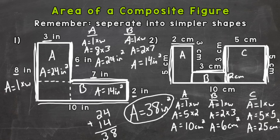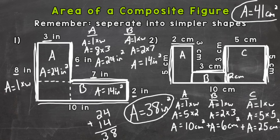Now we need to add these together: 10 plus 6 plus 25. Ten plus 6 is 16, plus 25 gives us 41. So the area equals 41 square centimeters, and that's our final answer for number two.